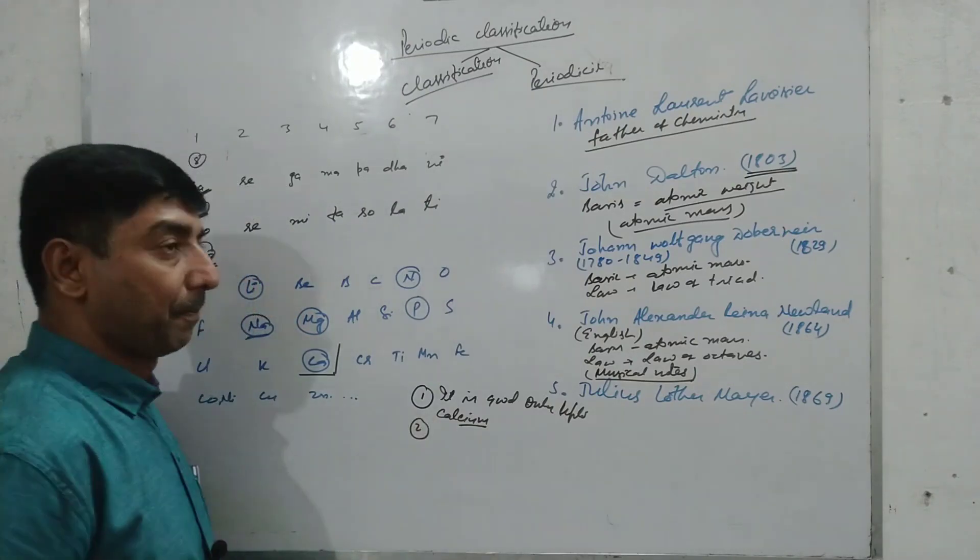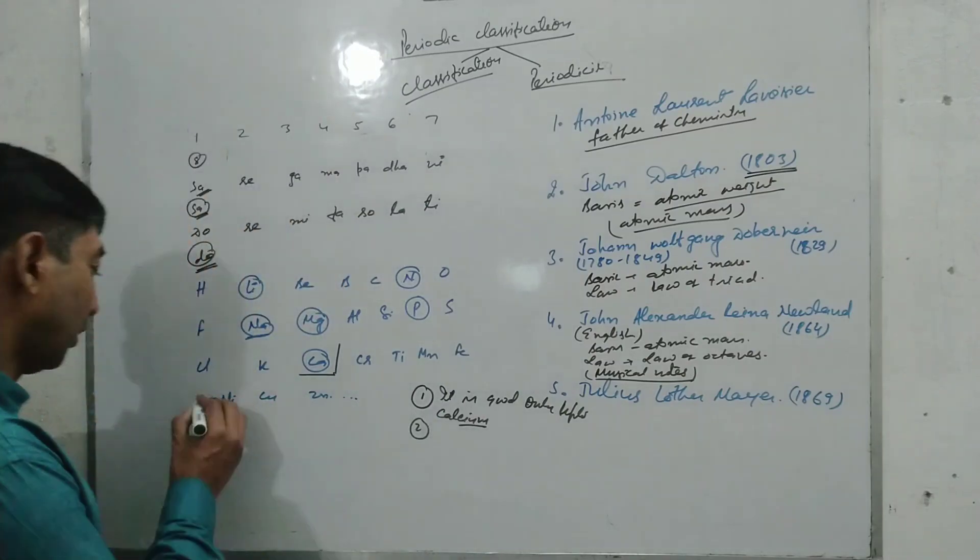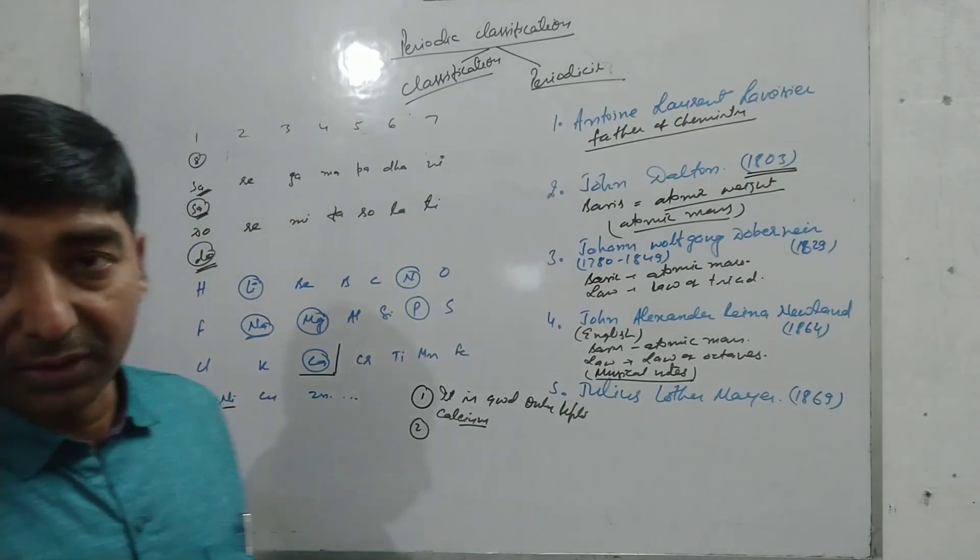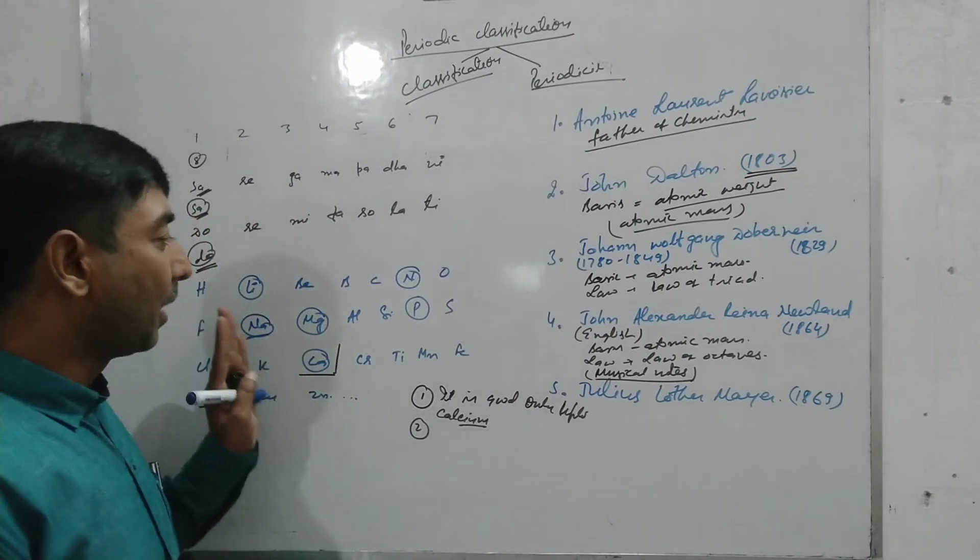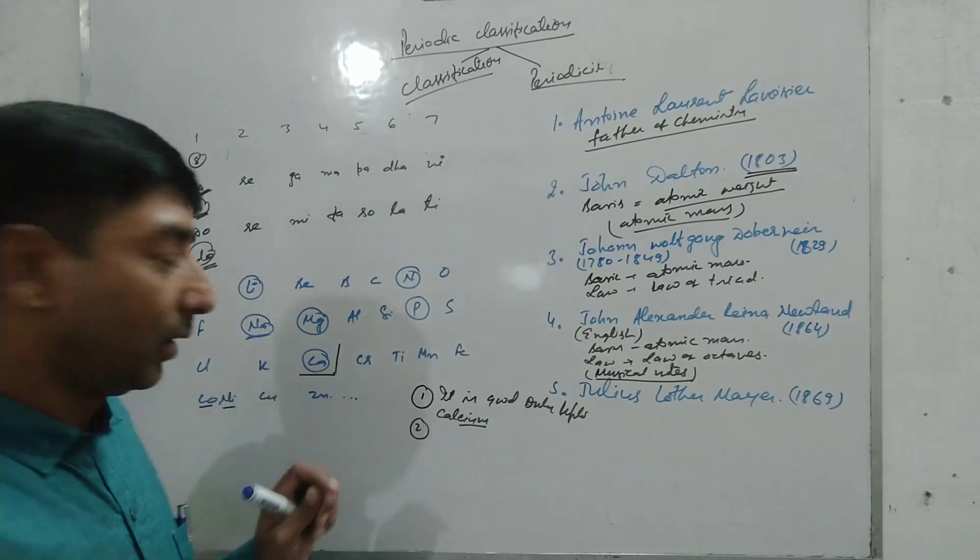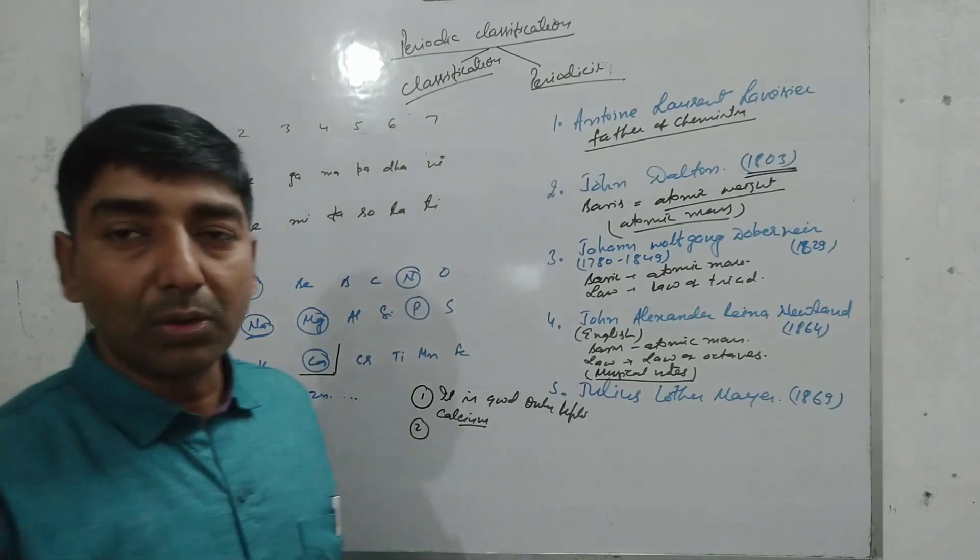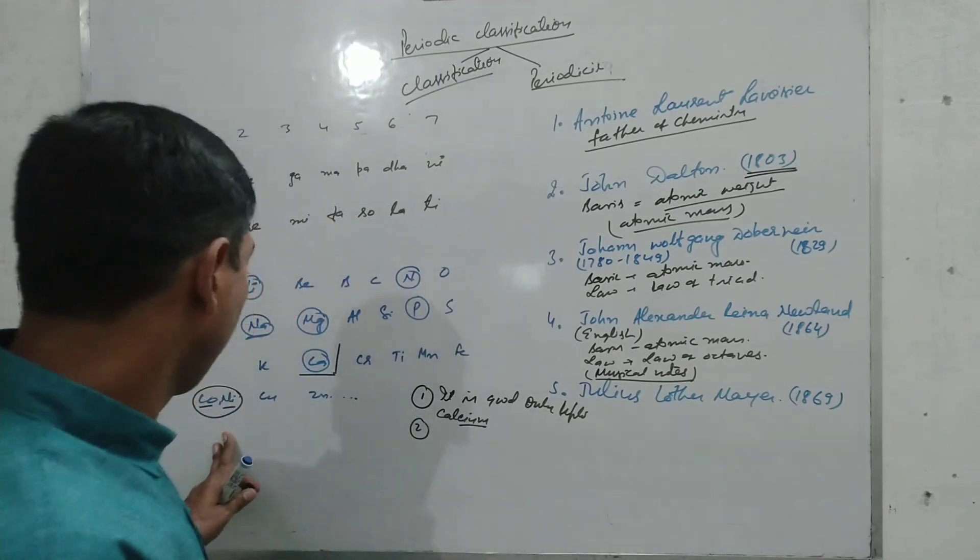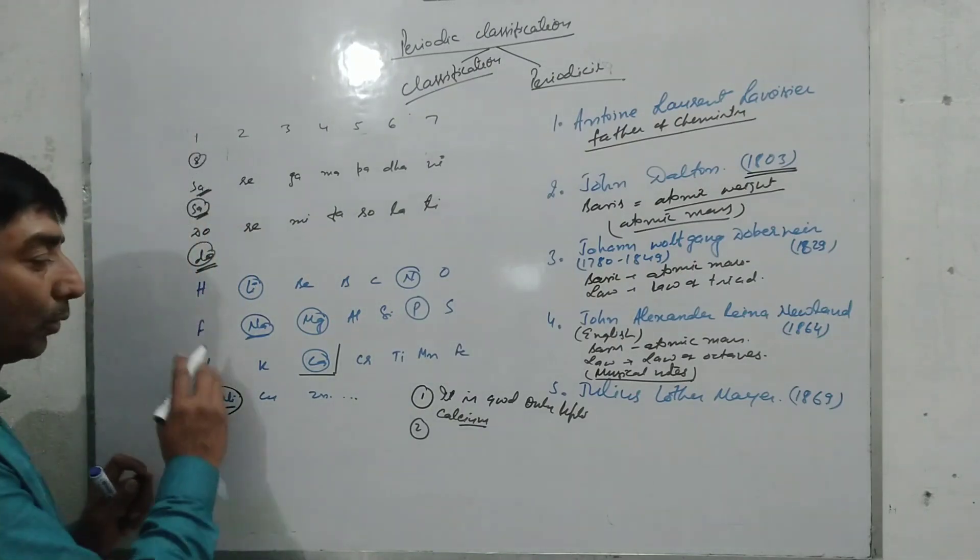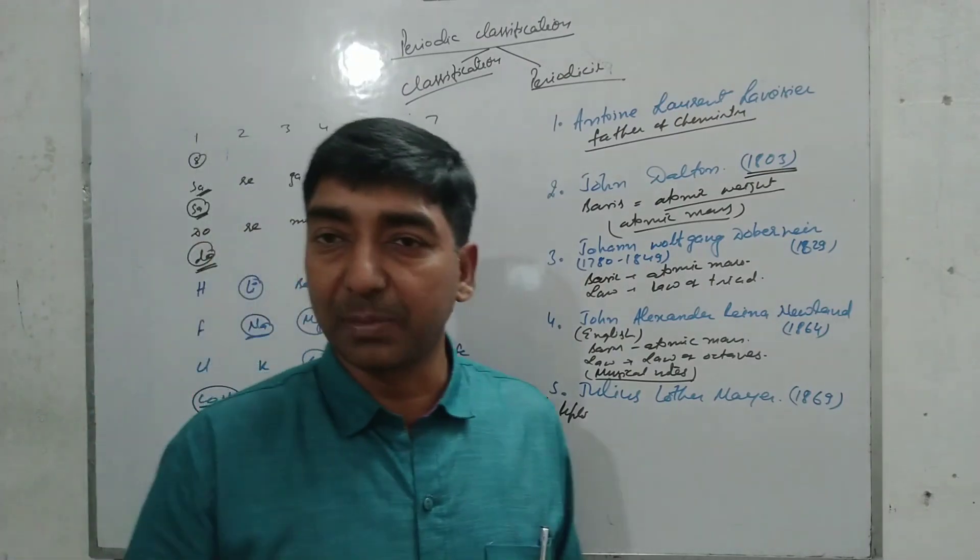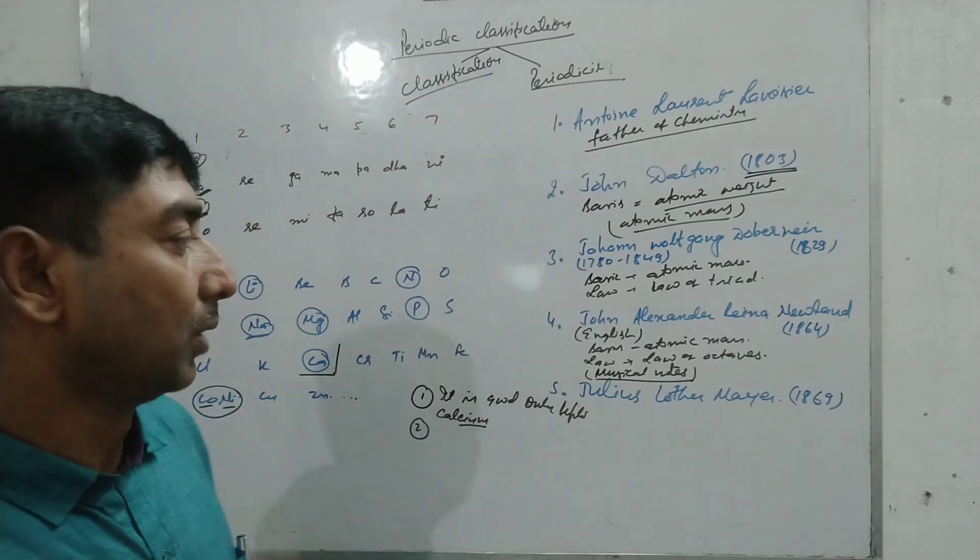He clubbed two elements together, cobalt and nickel. It was his practice to classify the elements and in every group there is only one element, then why these two elements are grouped together? He couldn't give any explanation regarding this. Now these two metals are placed with the non-metallic groups and he could not explain this.